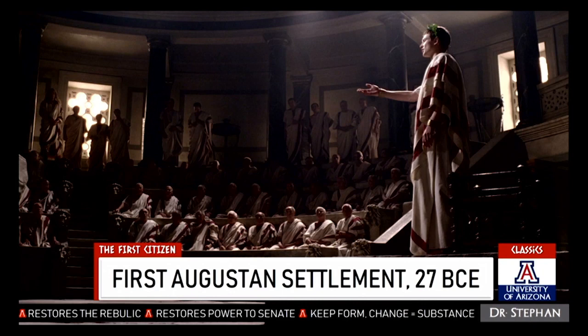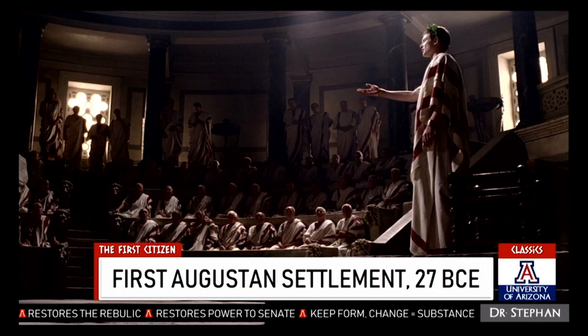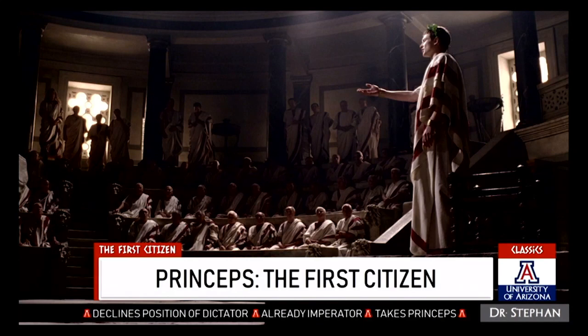Let's look at how Octavian is going to start addressing these things. The first thing to look at is the First Settlement, or the First Augustan Settlement, which happens in 27 BCE. A few years after the Battle of Actium, Octavian gets together with the Senate, and rather than trying to kill them, disband them, or crown himself king, what Octavian does is symbolically restore the republic. He gets in front of them and says, "I'm restoring the republic, and I'm restoring the power and the prestige to you senators." The basic idea is that Octavian is going to keep the senatorial form while changing the underlying substance. The Senate in return gives him a series of titles and basically absolute power, even though on the surface they appear to hold power.